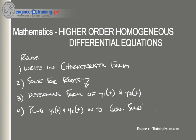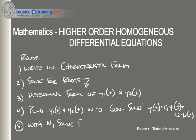The general solution is y(t) equals c1·y1(t) plus c2·y2(t). And then step five: if we have initial values, we can go ahead and solve for all the unknown constants. That is the five-step process for solving higher-order homogeneous differential equations.